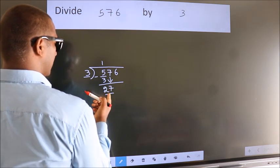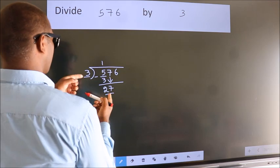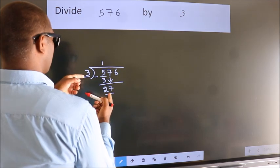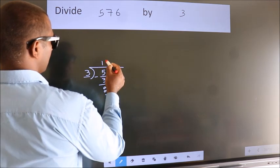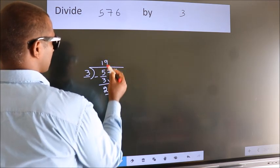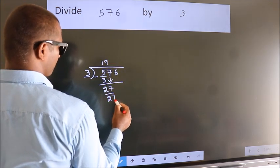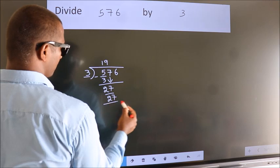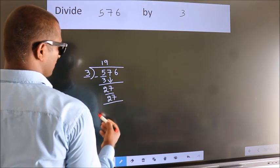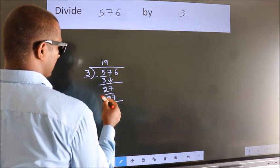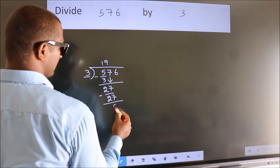When do we get 27 in the 3 times table? 3 nines — 27. Now we subtract. We get 0.